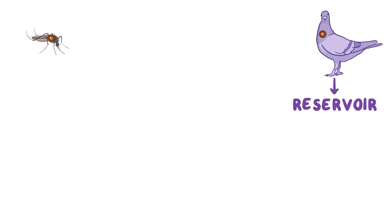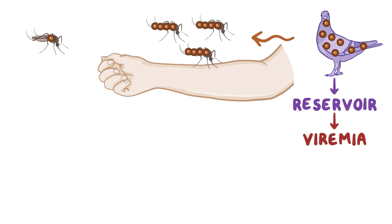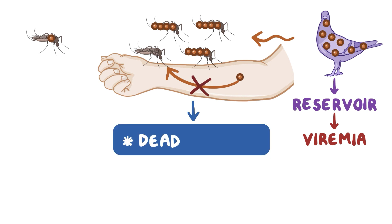Normally, West Nile virus is found in birds and mosquitoes. Birds act as a reservoir for the virus, meaning the virus can replicate at high enough levels to cause significant viremia, or elevated viral blood counts, which allows for transmission to other uninfected mosquitoes. The virus will then replicate inside the mosquito and ultimately move into its salivary glands. So when the mosquito bites another animal, it injects its infected saliva into the host, since mosquitoes normally use their saliva as an anticoagulant. When the vector mosquito bites a larger animal like a horse or human, the virus can't spread from these larger animals because their blood doesn't reach high enough levels of the virus to be passed on to any mosquitoes that happen to bite them — and this is called a dead-end host.